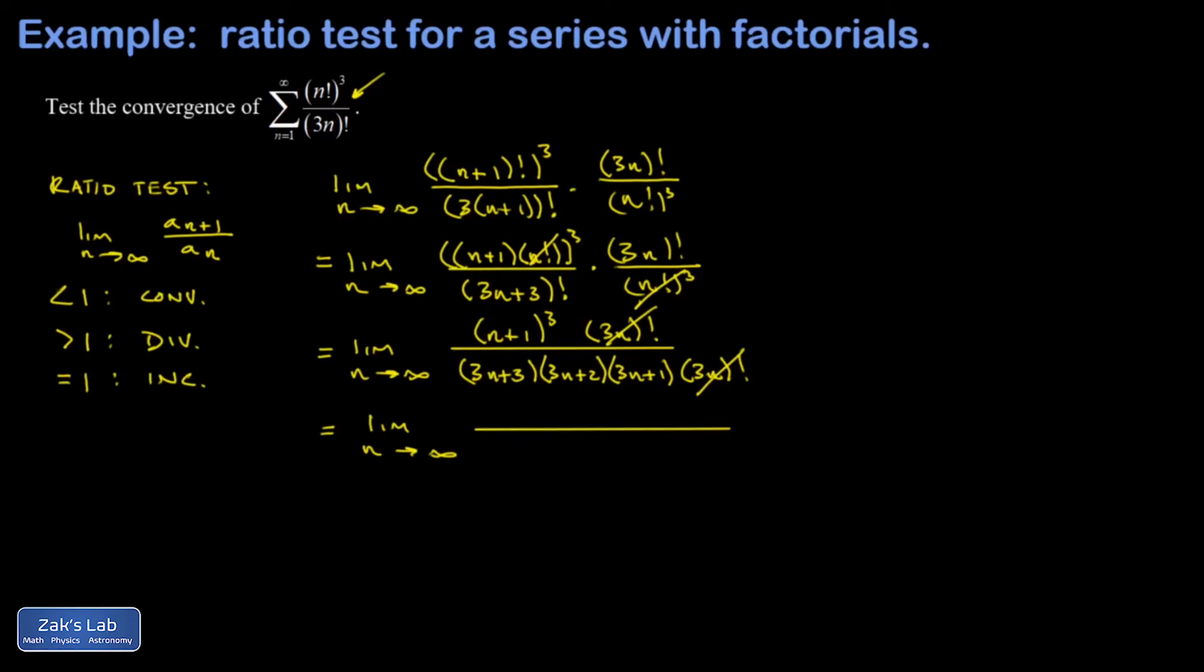I know (n+1)³ gives me n³ plus other stuff with smaller powers of n. In my denominator I get 3n times 3n times 3n—that's 27n³ plus other stuff with smaller powers of n. If you like, you could divide the top and bottom by n³, and your only survivors after you take the large n limit are going to be these first terms I wrote down: 1 in the numerator and 27 in the denominator.